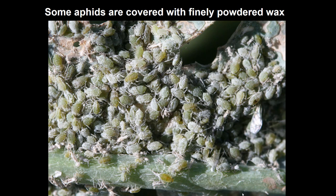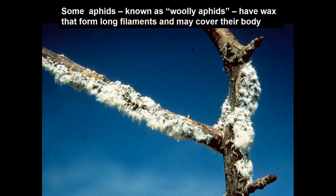Some aphids are covered with wax. It might be a fine powder of wax coming through little pores on the back of the body — these are cabbage aphids and they're kind of dusty with wax. If you look at the bottom of the picture you can see one that's just molted and doesn't have that grayish wax yet. Some aphids take this to an extreme, with wax coming out as long thin threads that completely obscure the insect — woolly aphids found on various woody plants including apples.